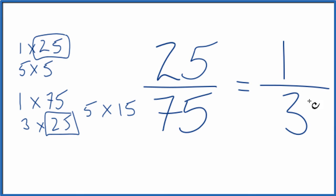We can't reduce this any further. These are equivalent fractions. 1 divided by 3, 25 divided by 75, you get the same number. We've just simplified 25 over 75 down to 1/3.